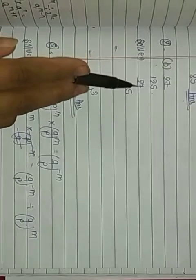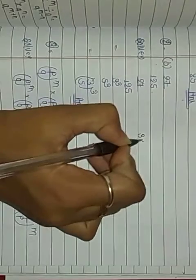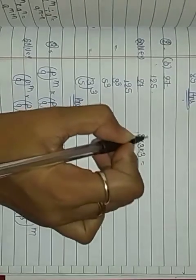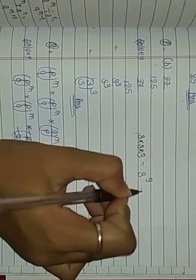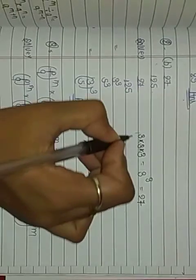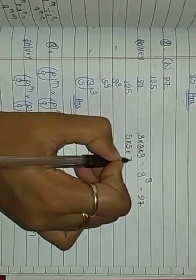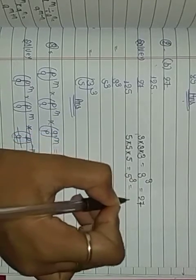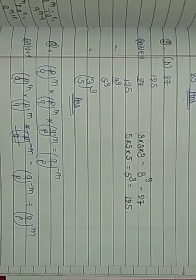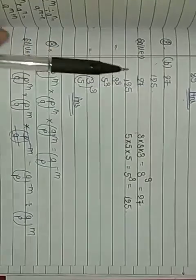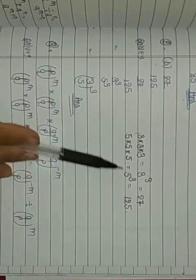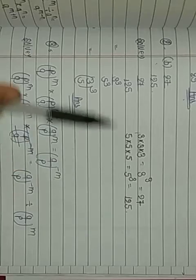What power can it be? We need to check 27 and 125 — whether they are someone's square, cube, or higher power. Look: if we multiply 3 three times, 3×3 is 9 and 9×3 is 27. That means 3 cubed is 27. And 5×5 is 25, and 25×5 is 125. So 5 cubed is 125. We need both to have the same power.